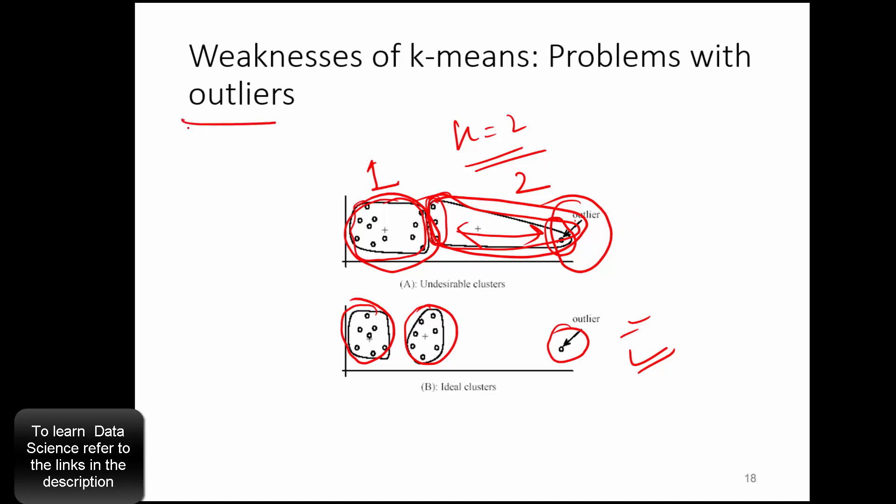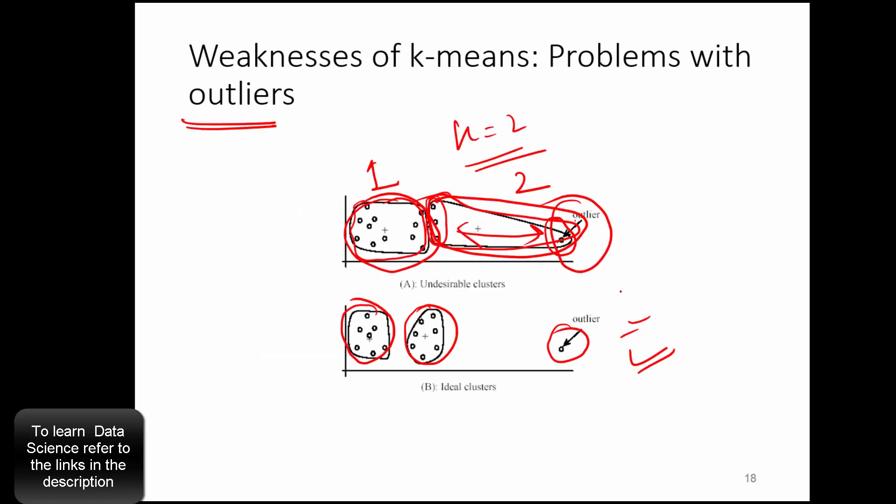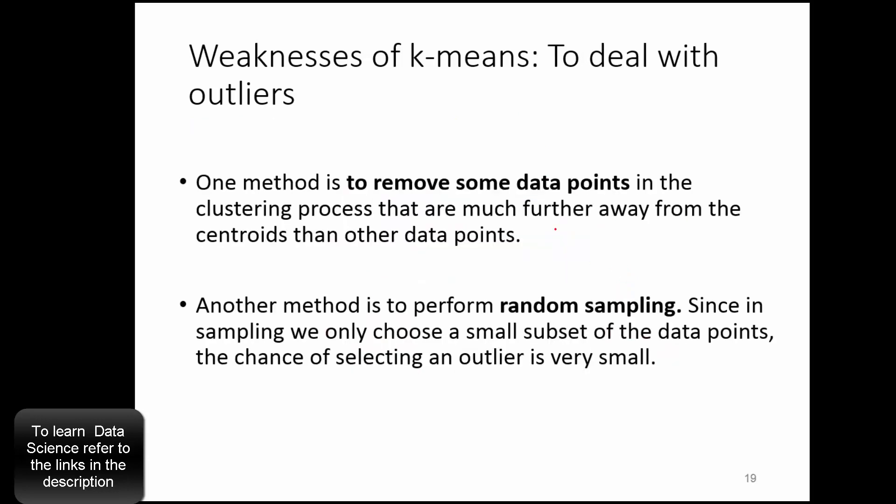There are methods to deal with outliers. So one method is to remove some of the data points in clustering process that are much farther away from the centroid. That means, just remove them, right? The way we did. We simply did not use this data point and then the clustering is much better now. So that's one way.